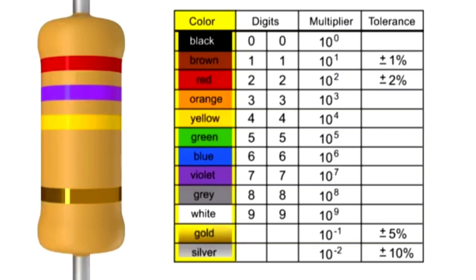Memorizing this color chart will enable you to become proficient at quickly decoding and using resistors. In a 4-band resistor, the first two bands represent the digits or significant figures. The third band indicates the multiplier, and the fourth band indicates the tolerance.